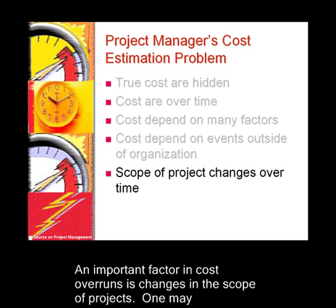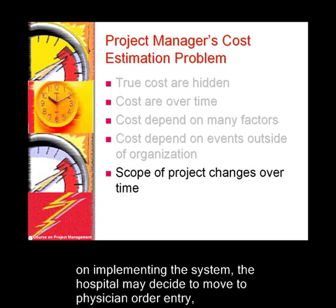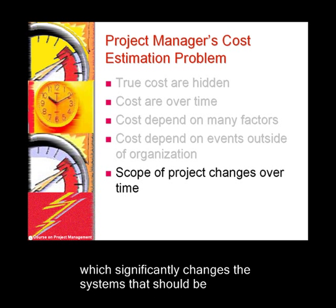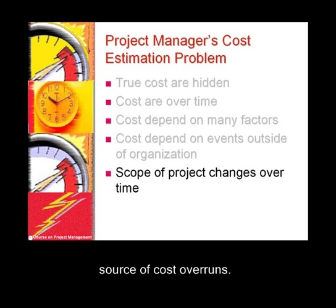An important factor in cost overruns is changes in the scope of projects. One may start with an electronic health record for the hospital, but after several years of implementation work, the hospital may decide to move to physician order entry, which significantly changes the systems to be implemented and the cost of operations. Changes in scope are an important source of cost overruns.